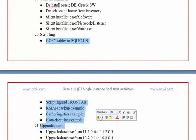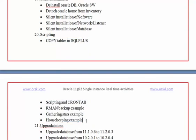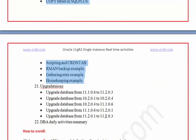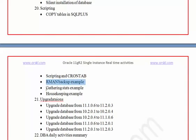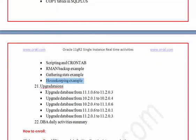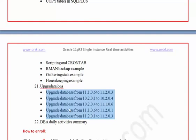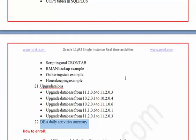Chapter twenty covers scripting — how to write simple shell scripts for day-to-day DBA activities, including RMAN backup scripts, gathering stats scripts, and housekeeping scripts as examples. Chapter twenty-one covers database upgrades from 10.2 to 11.1, 11.1 to 11.2, and 10.2.0.4 to 11.2 — essentially all combinations from 10g R2 to 11g R2. The final chapter summarizes what a DBA does every day — what he starts with when he comes to the office and what he ends with before he leaves.